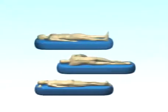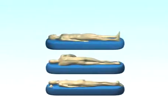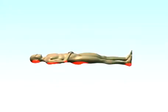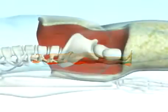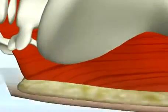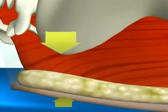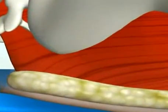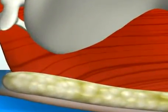A pressure ulcer can be described as an area of localized damage resulting from the effects of unrelieved pressure, shear and friction. Typically, pressure ulcers occur over the bony prominences. Body weight is transmitted through the skeleton, which results in higher pressures being exerted on the soft tissues near these bony prominences.